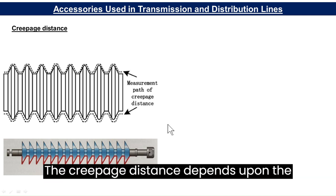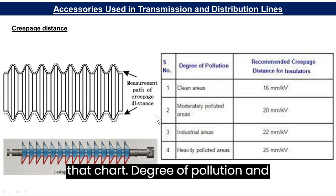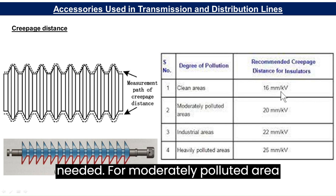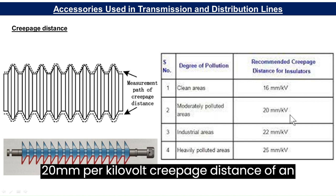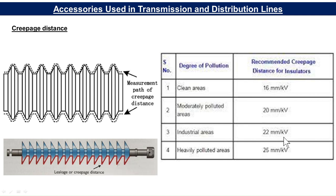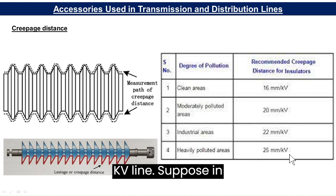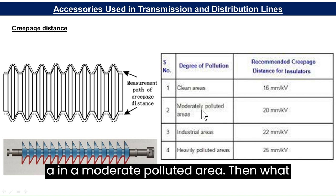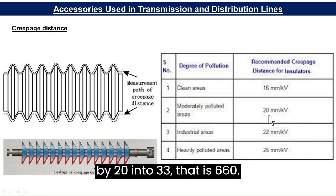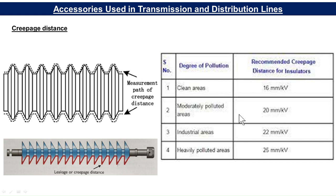The creepage distance depends upon the area's pollution level. For a clean area, 16 mm per kV is needed. For a moderately polluted area, 20 mm per kV is needed. For industrial areas with more pollution, 22 mm per kV is needed. For heavily polluted areas, 25 mm per kV is required. For example, for a 33 kV line in a moderately polluted area, the creepage distance is 20 × 33 = 660 mm.